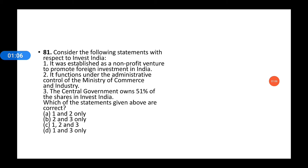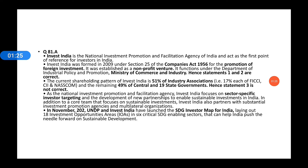The third statement is wrong. The central government and state governments own 49% of the shares in Invest India. So statement three is wrong; one and two are correct. It was established as a non-profit venture to promote foreign investment in India, and it functions under the administrative control of the Ministry of Commerce and Industry. So option A is correct.